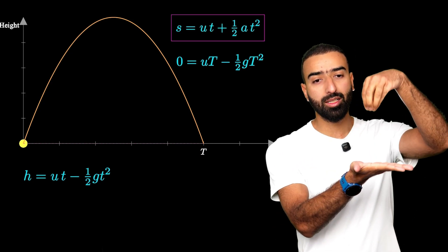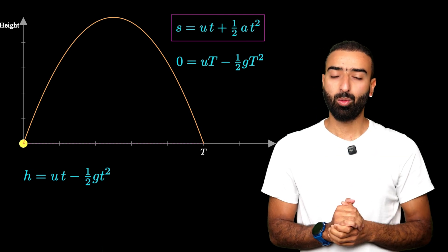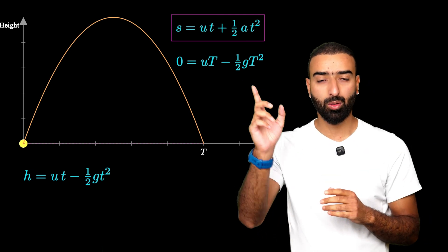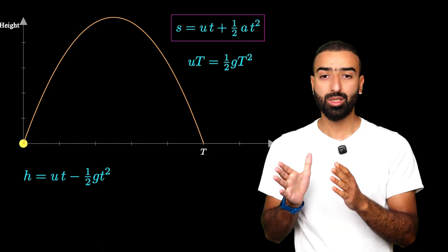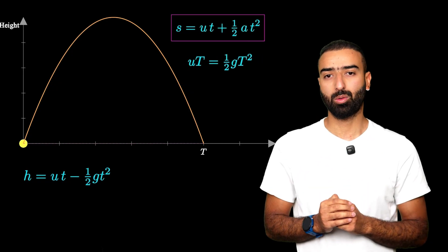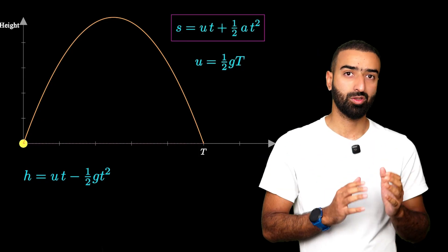Why 0? Because the vertical displacement is 0. Great. Now we can rearrange this equation and it's going to turn out to be UT equals half GT square. It can be rearranged again for U equals half GT.